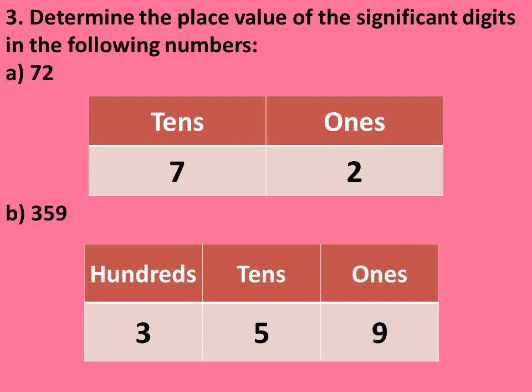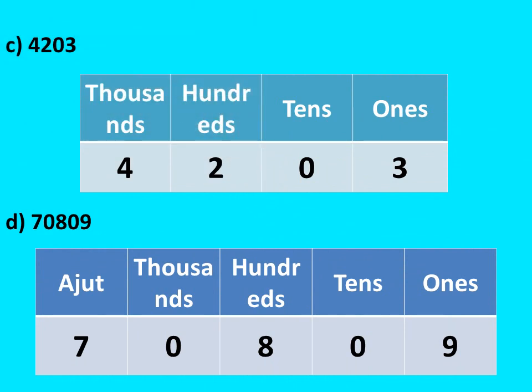Number a: 72. Ones place has 2, tens place has 7. Number b: 359. Ones place is 9, tens place is 5, hundreds place is 3. Then we have 4,203. Ones is 3, tens is 0, hundreds is 2, thousands is 4.